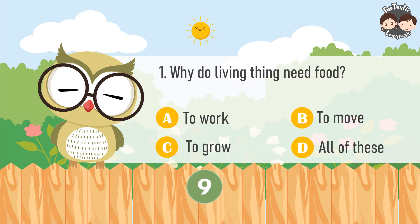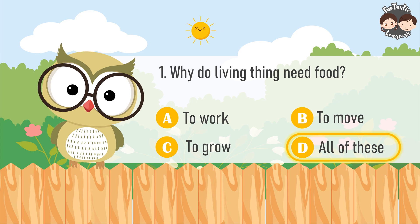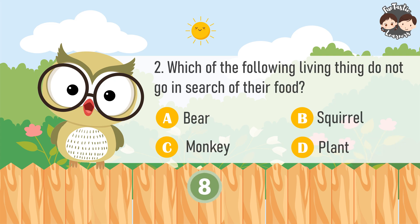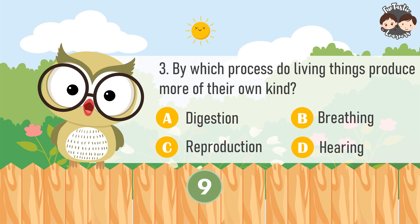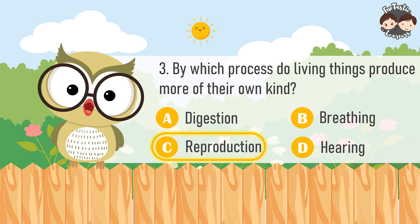Why do living things need food? All of these. Which of the following living things do not go in search of their food? Plant. By which process do living things produce more of their own kind? Reproduction.